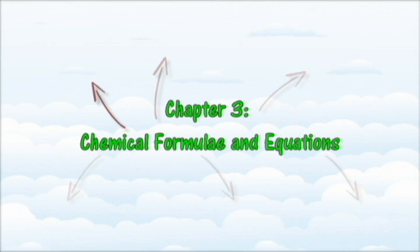In this chapter, we will learn more about the relationship between the mole of the compound with the number of particles, particle mass, and gas volume. We will also learn about the way to build formulae and balance chemical equations. There are 6 main sections in this chapter.